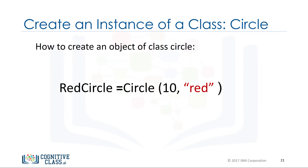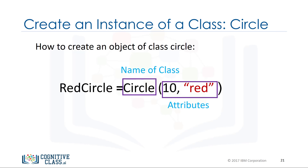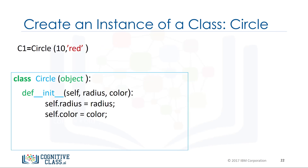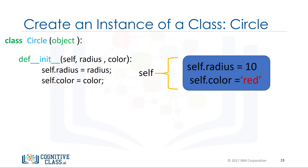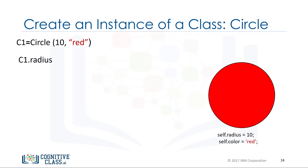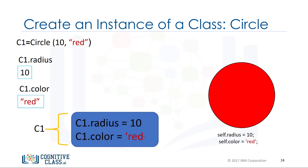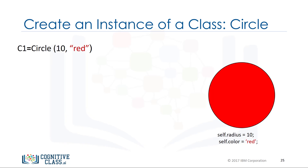After we have created the class, in order to create an object of class circle we introduce a variable — this will be the name of the object. We create the object using the object constructor, which consists of the name of the class as well as the parameters, which are the data attributes. When we create a circle object we call the code like a function, and the arguments passed are used to initialize the data attributes of the newly created circle instance. It is helpful to think of self as a box that contains all the data attributes of the object. Typing the object's name followed by a dot and the data attribute name gives us the data attribute value — for example, radius is 10. In Python we can also set or change the data attribute directly, and we can verify that the color data attribute has changed.